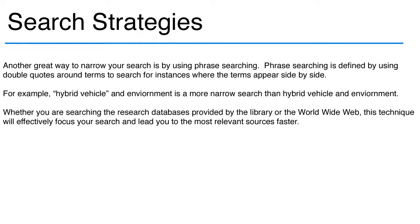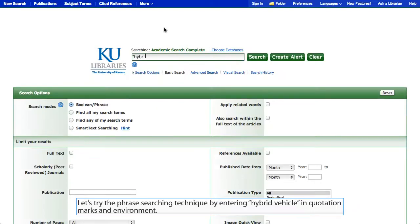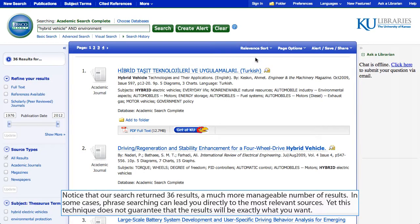Another great way to narrow your search is by using phrase searching. Phrase searching is defined by using double quotes around terms to search for instances where the terms appear side by side. For example, "hybrid vehicle" AND environment is a more narrow search than hybrid vehicle AND environment without quotes. Whether you are searching research databases or the World Wide Web, this technique will effectively focus your search. Notice that our search returned 36 results — a much more manageable number. In some cases, phrase searching can lead you directly to the most relevant sources.